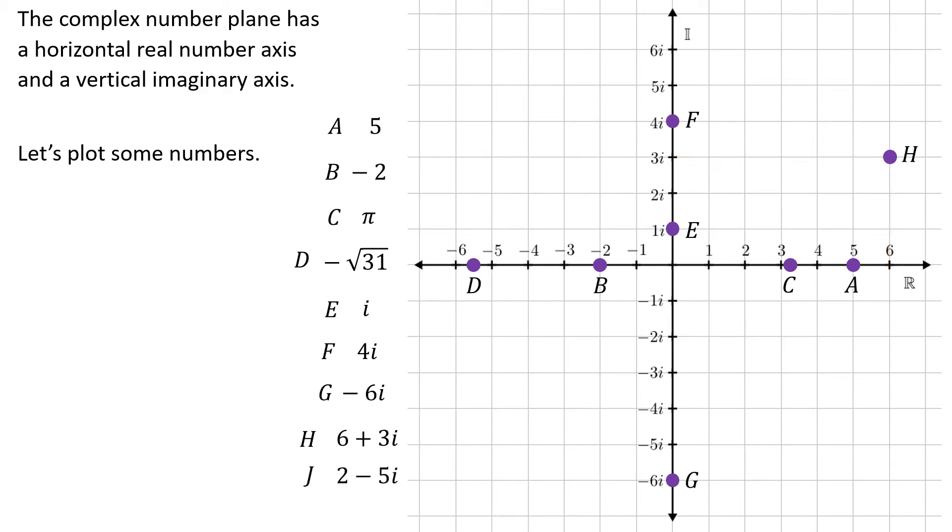So there is the complex number H plotted on the graph. 2 minus 5i. Notice I skipped the letter i and I went to J, because lowercase i we're using as our imaginary friend. And then if you do an uppercase I and make it look like a roman numeral, it gets kind of confusing because you think oh is it quadrant number 1 or is it that big I for that imaginary number line.